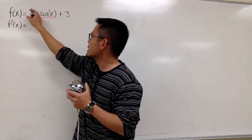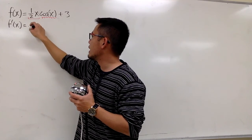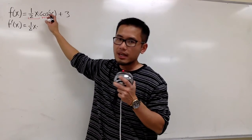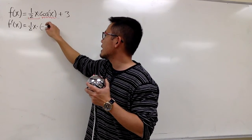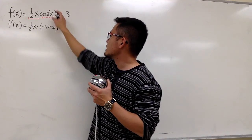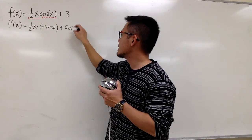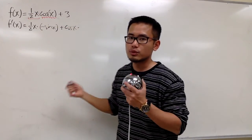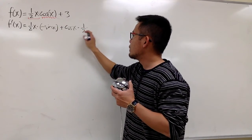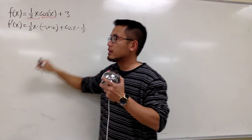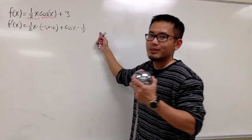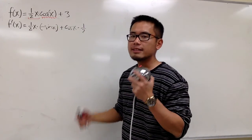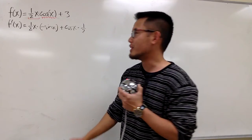Product rule in action. We keep the first function ½x and multiply by the derivative of the second. The derivative of cosine x is negative sine, so we have negative sine x. Then we add the second function, which is cosine x, and multiply by the derivative of ½x, which is just ½. And the derivative of the constant +3 is just 0. So this is the first derivative.